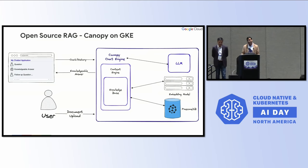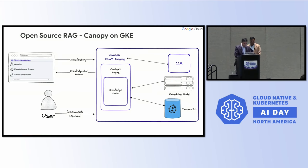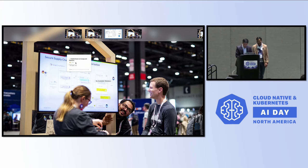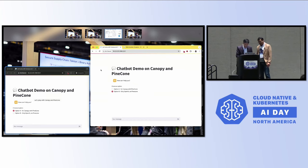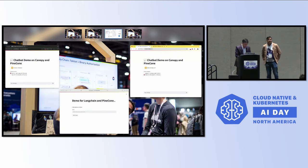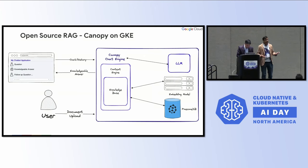With Canopy, the challenge we found is that it works very closely with Pinecone. If you're not using Pinecone, then Canopy may not be a relevant use case. We wanted to show how Canopy and Pinecone can be used for a small application built as part of the demo. We developed three kinds of applications: one with LangChain and Pinecone, another with Canopy and Pinecone, and a third using no vector database — just an open source LLM to fetch data on specific results.